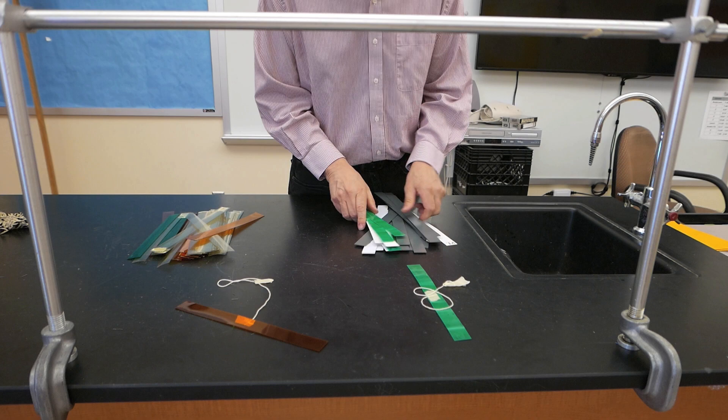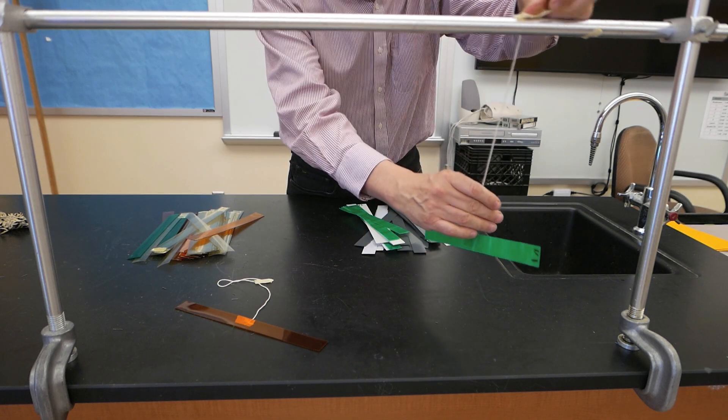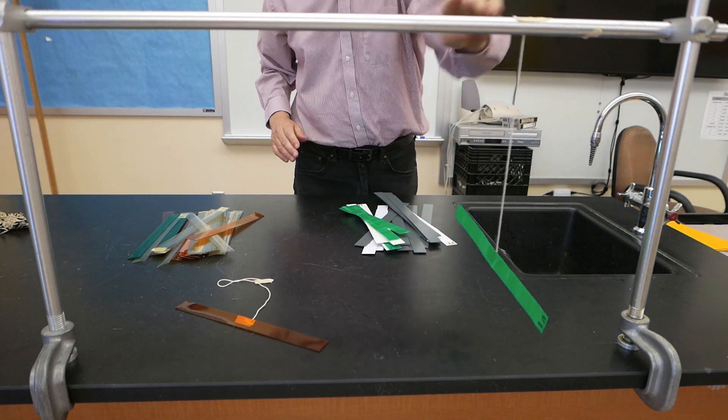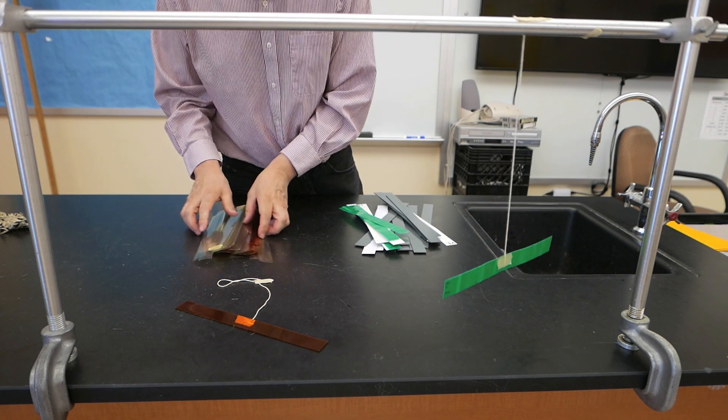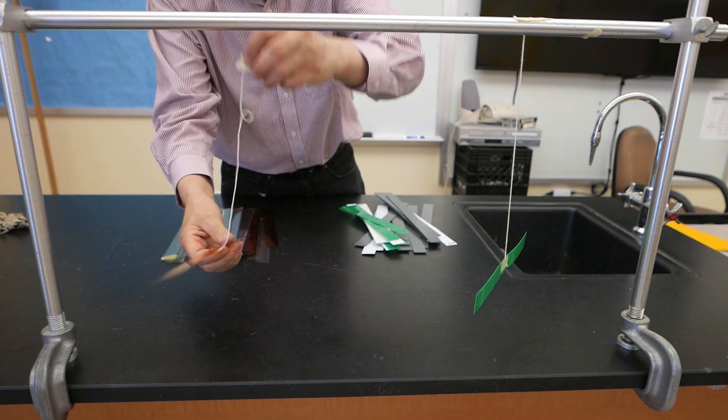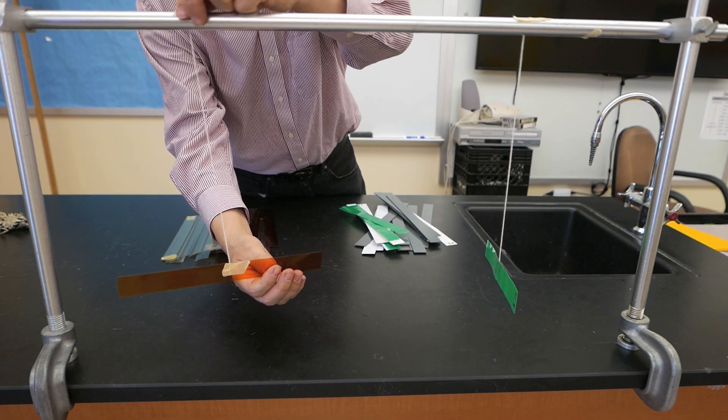Our students would start off with two pieces of vinyl. One piece they would attach a string to and hang it up from the bar or a table. The second material is acetate. Once again they would have two pieces. They would hang one of the pieces up from a bar or table.